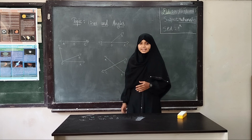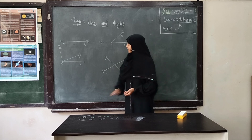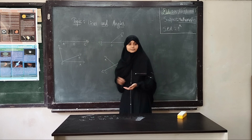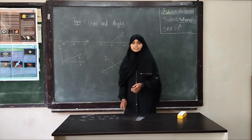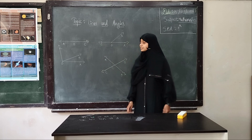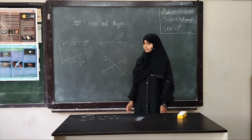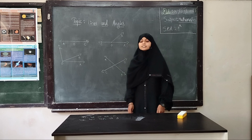How many line segments are there in this first figure? Yes, Naina. There are three line segments: AB, BC, and AC. Very good.